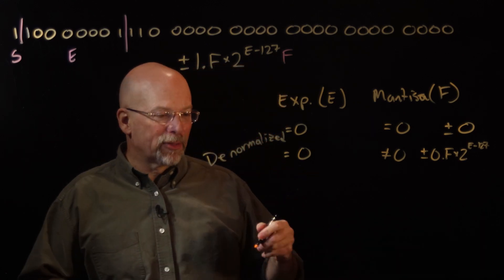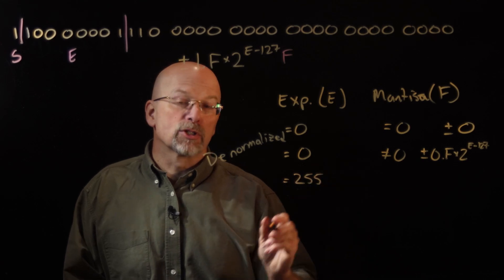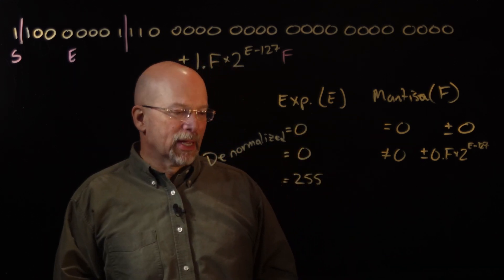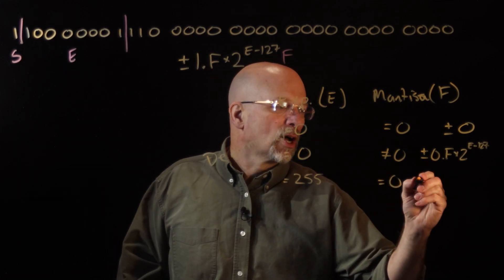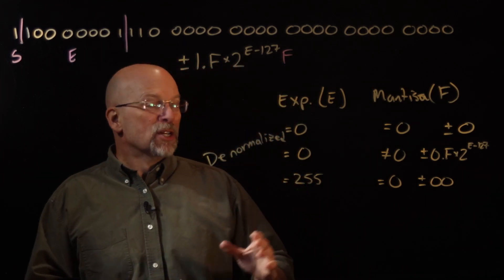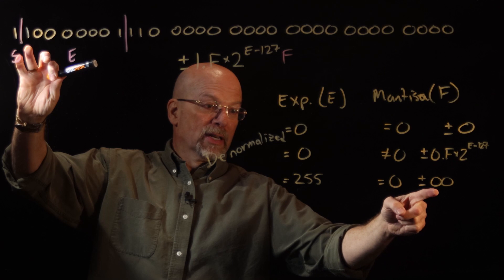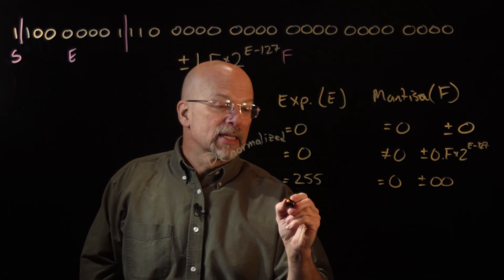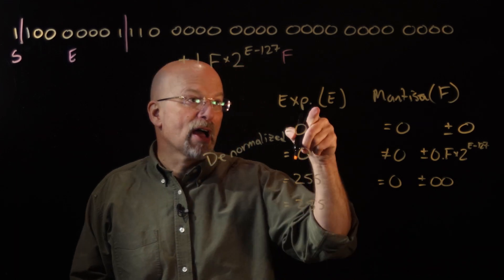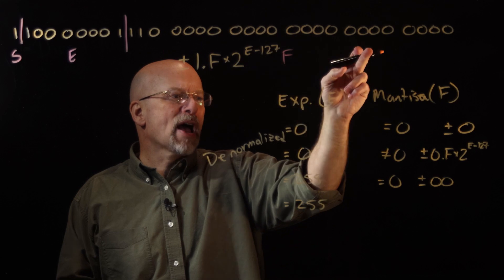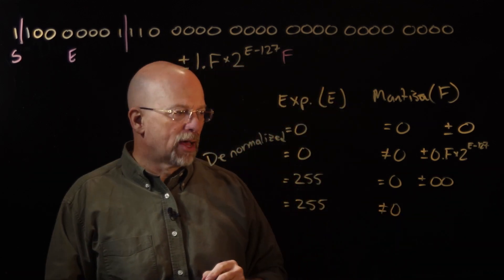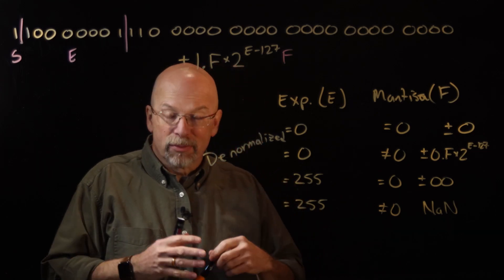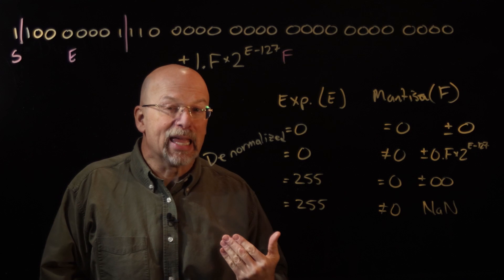There are a couple of other special cases we talked about last time. Whenever the exponent is equal to 255, all 1s — the largest possible exponent — if the mantissa is equal to 0, we're talking about plus or minus infinity, depending on the sign bit. So 255 with a mantissa of 0 means infinity. There was one more case: 255 for our exponent with a non-zero F. This is what we call Not a Number (NaN), meaning something happened — like a division by zero — that resulted in something we cannot represent numerically.